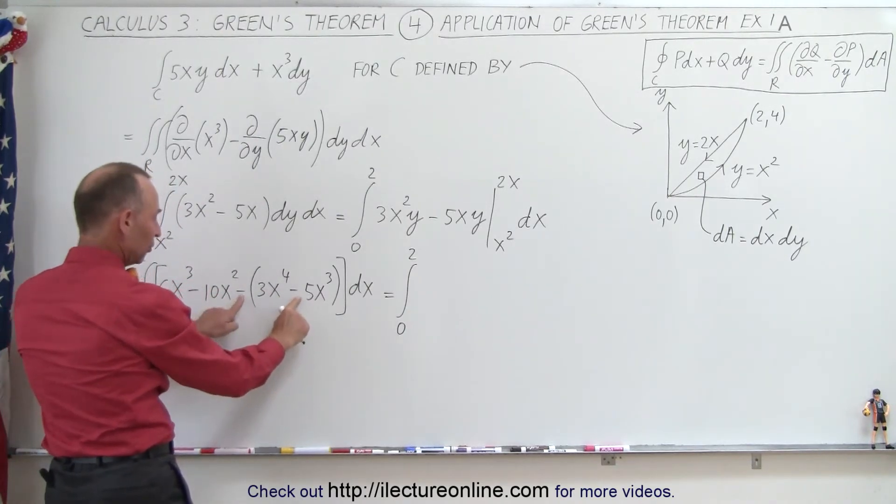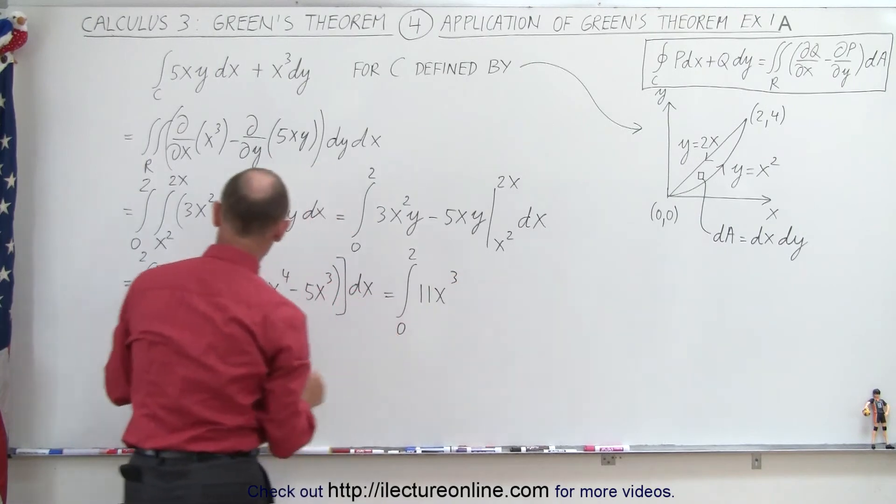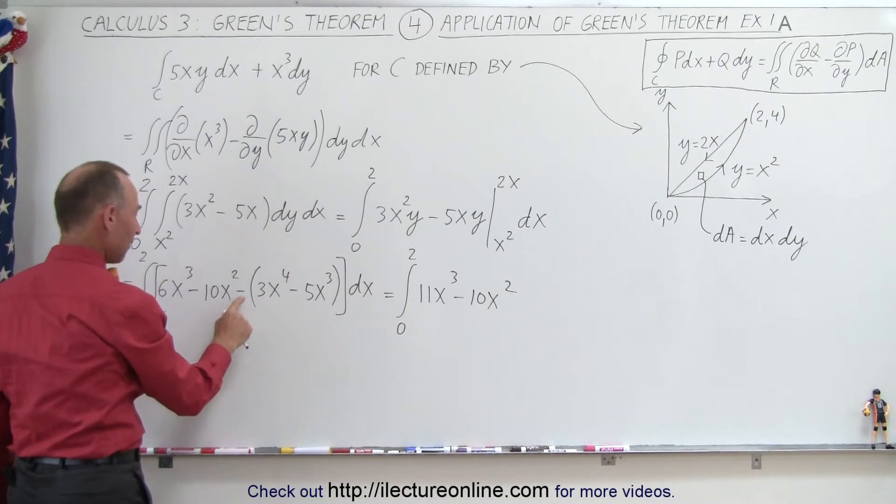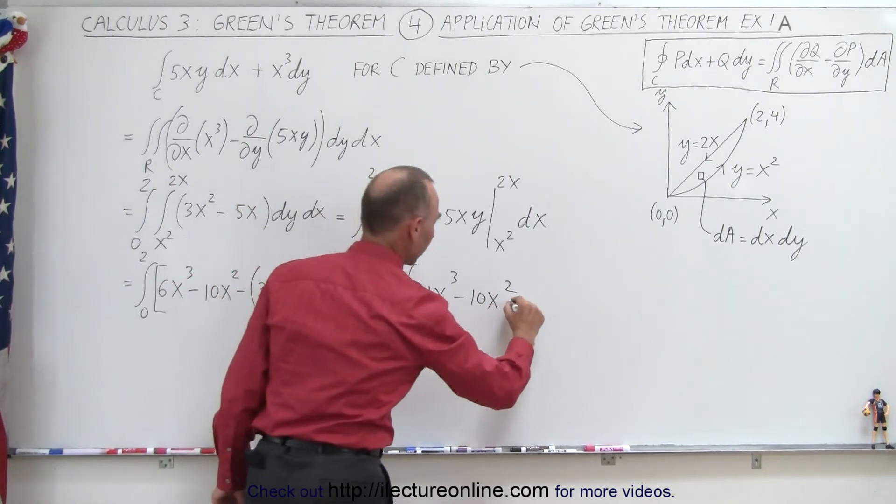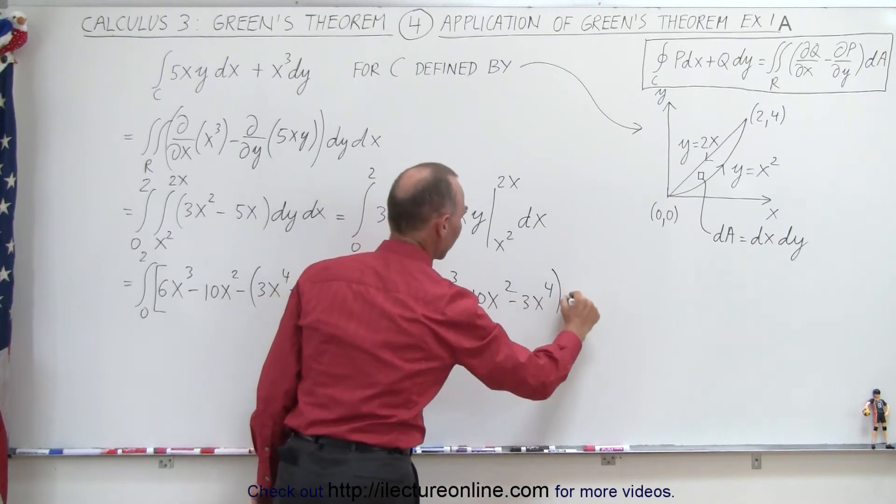6 plus 5, because the two negatives cancel out, this gives us 11x³. Here we have -10x², and then here we have -3x⁴, and the whole thing times dx.